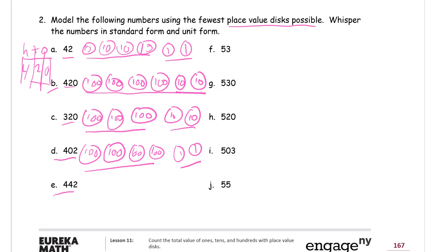This one, one of my favorite numbers. That's a 40 there, so I need 4 tens. And then I need a couple of ones. So this is 442. That's standard form, or number form, which is the same thing. And it's 4 hundreds, 4 tens, 2 ones. That's unit form.